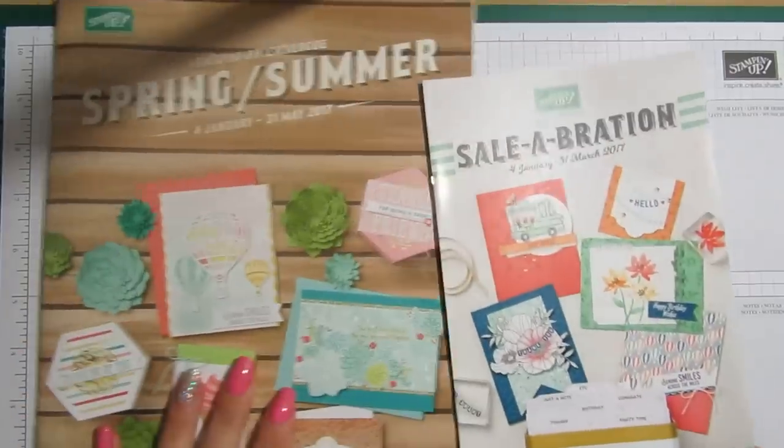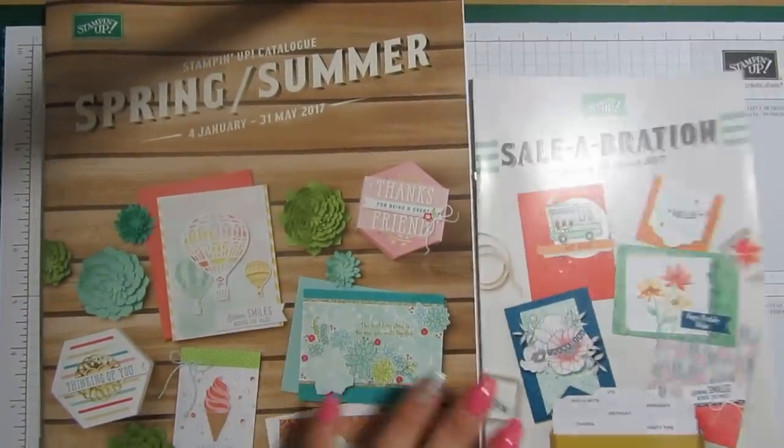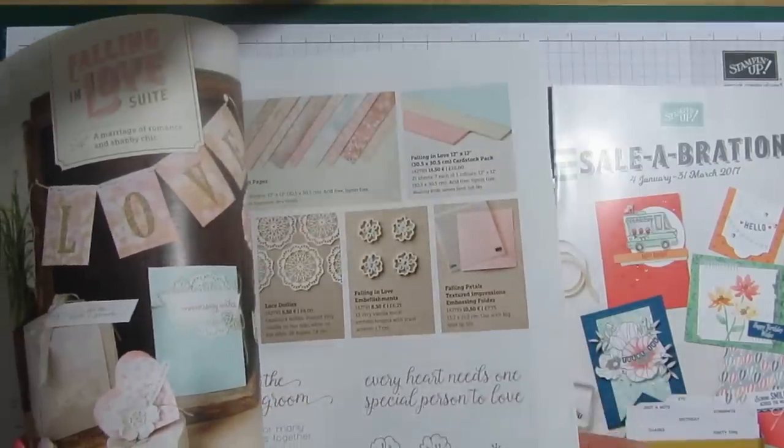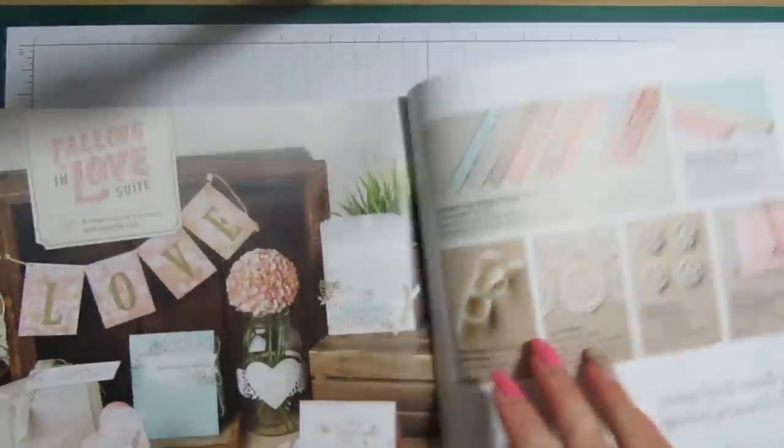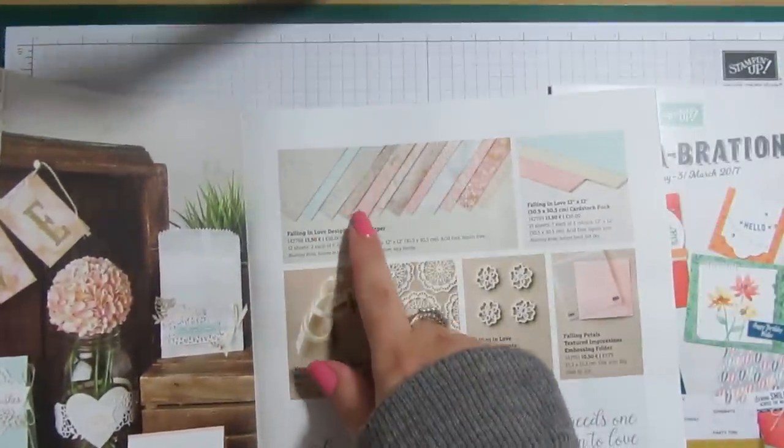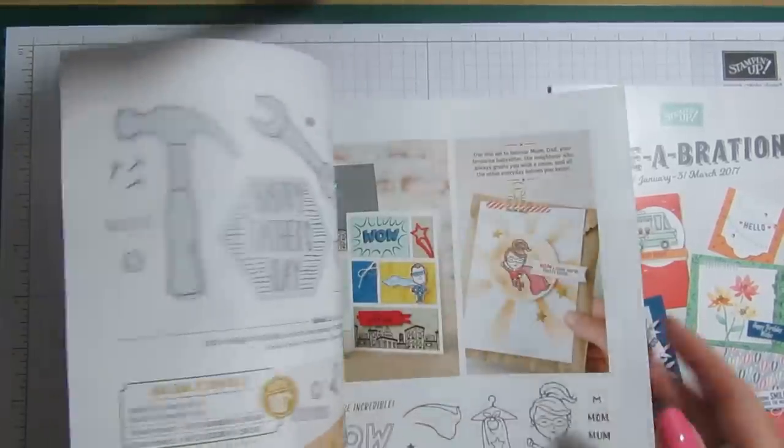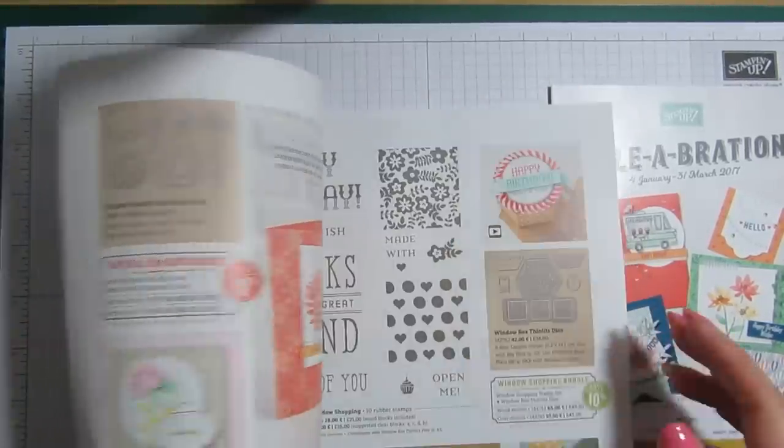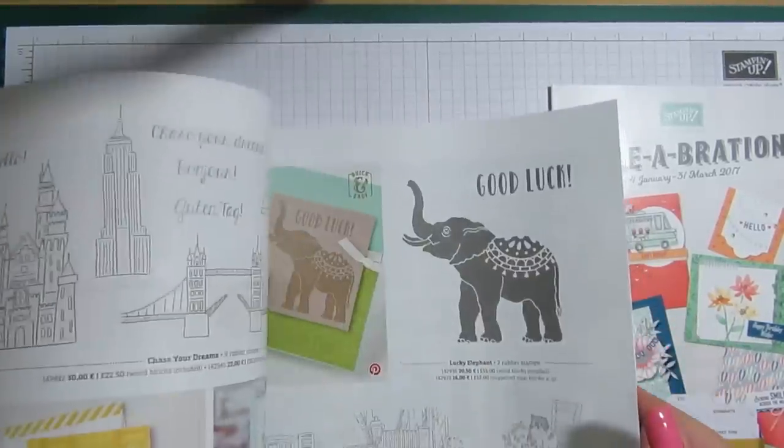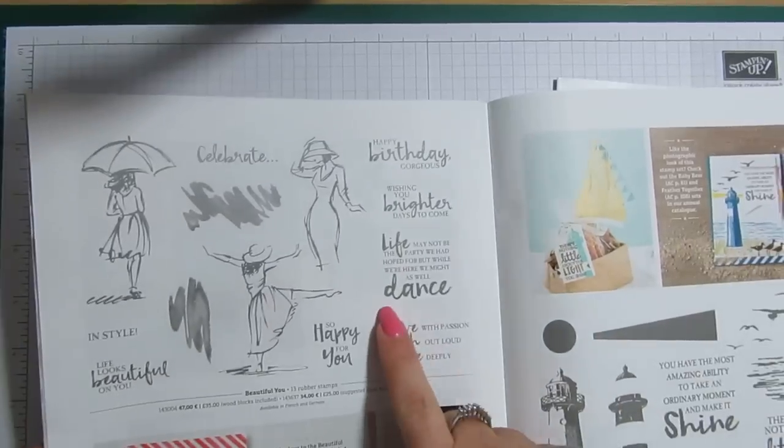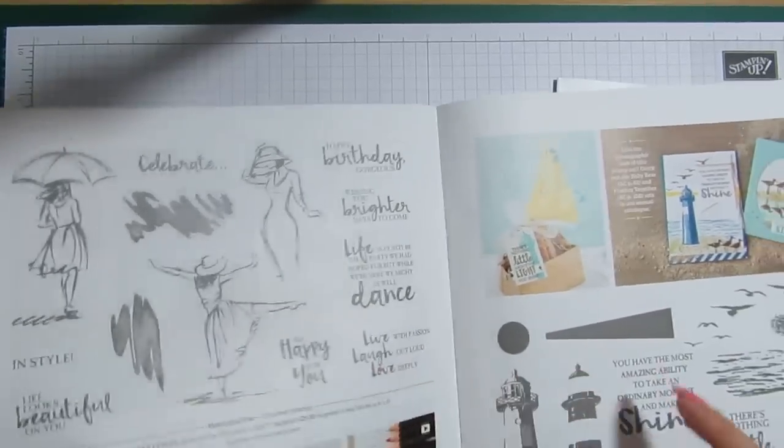So today the new catalogs have gone live which is the spring summer and the celebration. So the paper that I'm using is on page 51 and it's this Fallen in Love and honestly I really have fell in love with it, it's absolutely stunning. I'm going to give you a quick flick through it and the stamp set which you've probably seen around a lot anyway but it's that one which is Beautiful You.